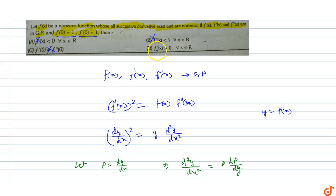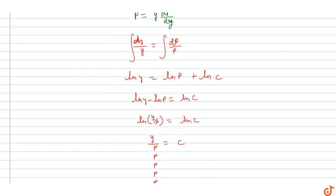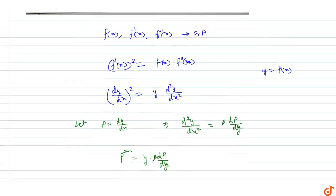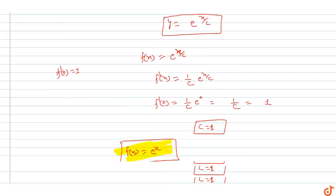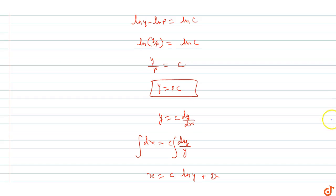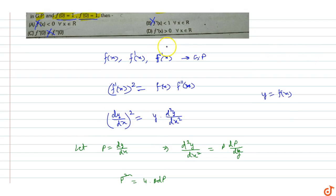Option D states that f'(x) > 0 for all x belonging to ℝ. Since f'(x) = e^x and e^x is always greater than 0 for all real x, option D is correct. The answer for this question is option D.